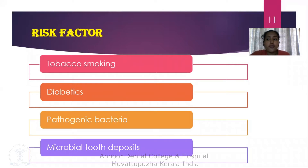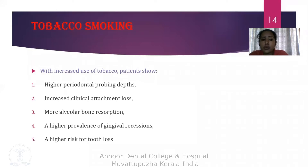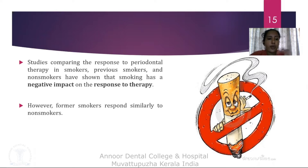Tobacco is a well-established risk factor for periodontitis. There exists a direct relationship between smoking and the prevalence of periodontal disease. It has been noted that those individuals with increased use of tobacco show a higher periodontal probing pocket depth, increased clinical attachment loss, more alveolar bone loss, a higher prevalence of gingival recession, and a higher risk of tooth loss. Current smokers show a negative response towards periodontal therapy — there is no significant reduction in probing pocket depth or clinical attachment levels.